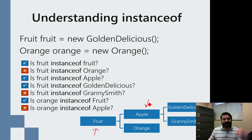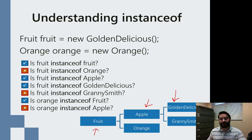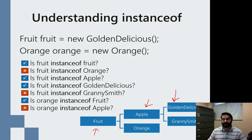Apple actually has its own two classes that inherit from it: Golden Delicious and Granny Smith. So what we can look at is, if we have some code, I've made a fruit and I've made an orange.